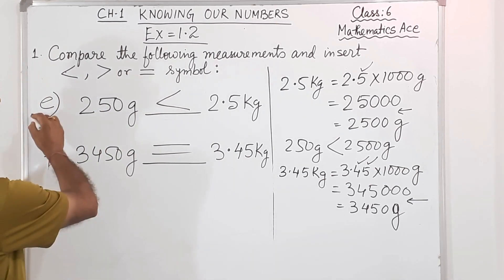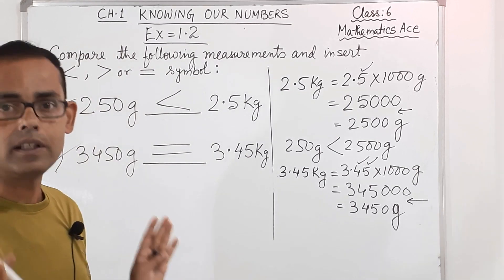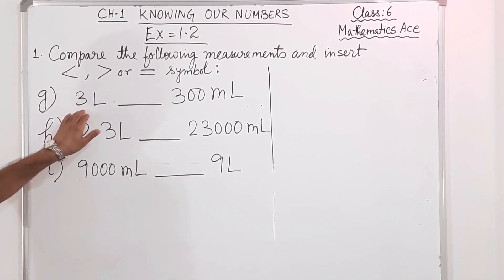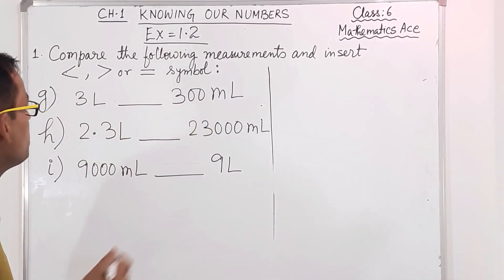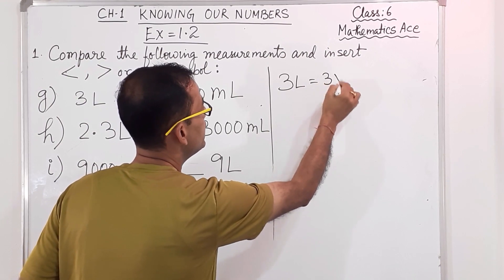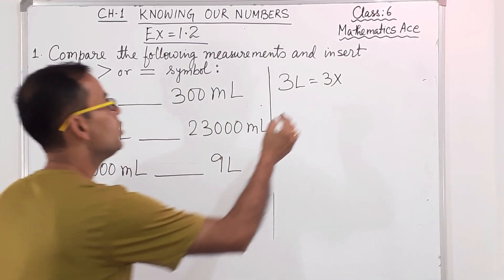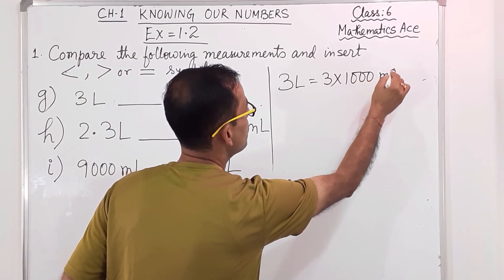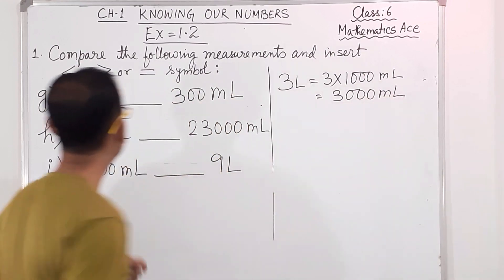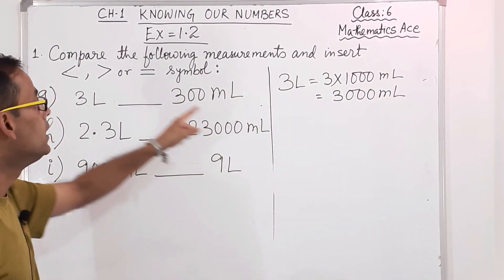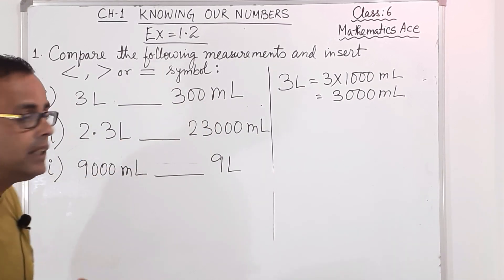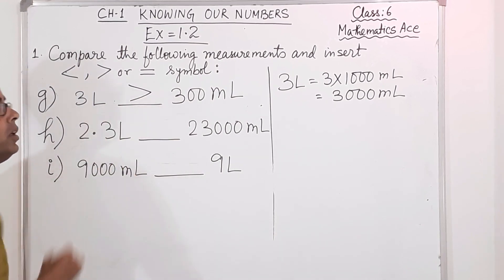Question G: 3 liter versus 300 milliliter. We have to make the units same. So 3 liter — converting to milliliter, I multiply by 1,000, giving 3,000 milliliter. So 3,000 milliliter is obviously greater than 300 milliliter. We write greater than symbol.